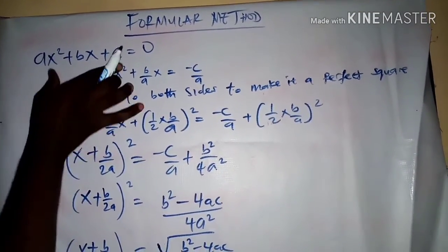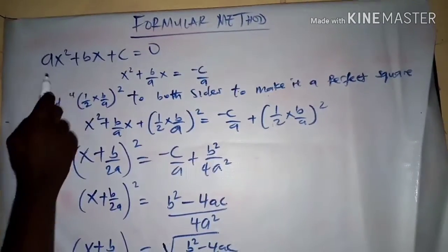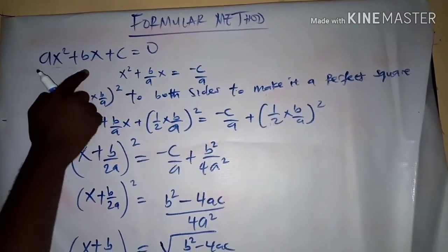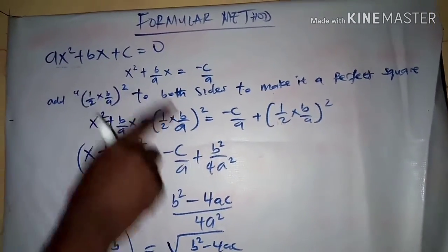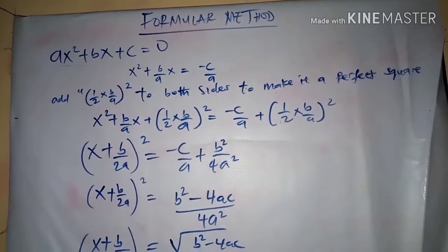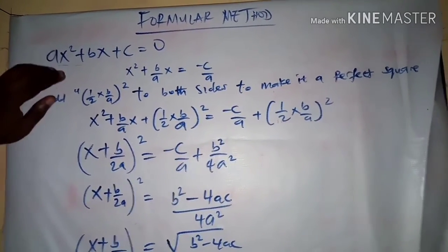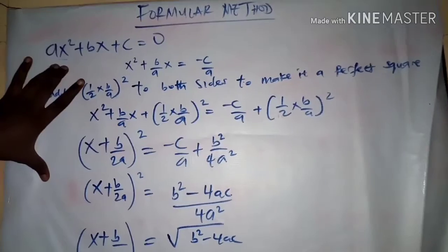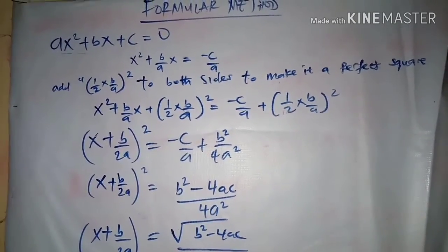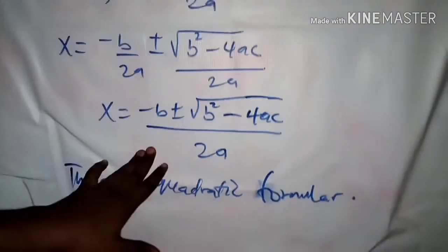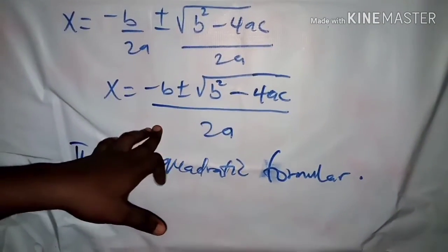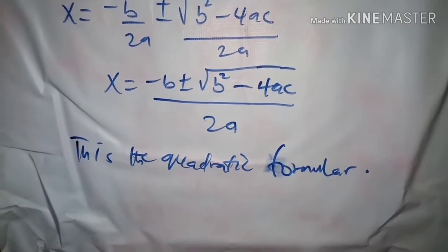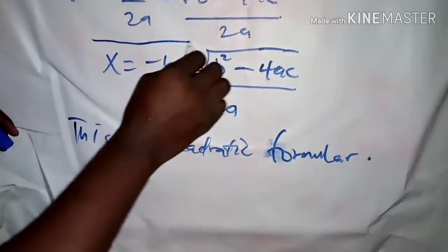Generally, a quadratic equation is meant to be in this form: ax² + bx + c = 0. This is what a quadratic equation looks like. What I want to show you here is how I derived this formula, which is called the quadratic formula — or we can call it the almighty formula.